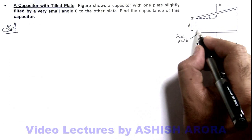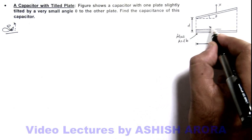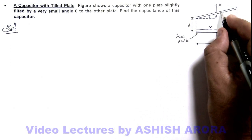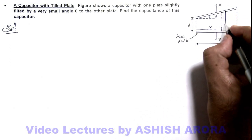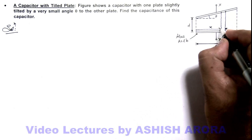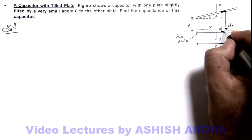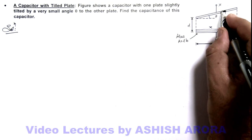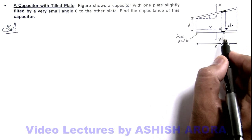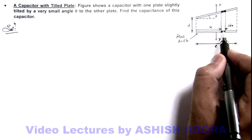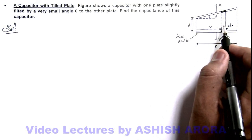For which here, say at a distance x from one side, we consider a capacitor of width dx. And the upper and lower plates of this elemental capacitor can be taken as having capacitance dc.